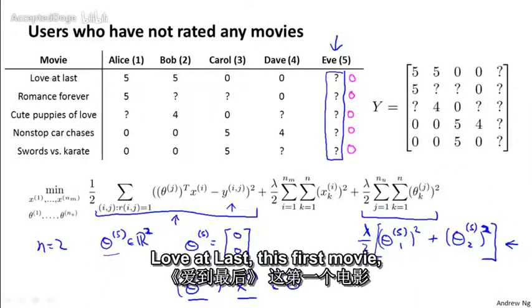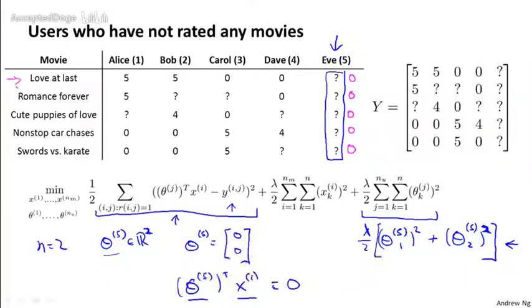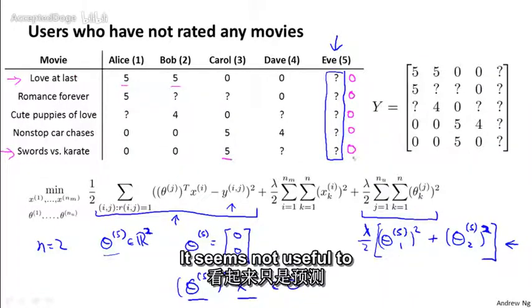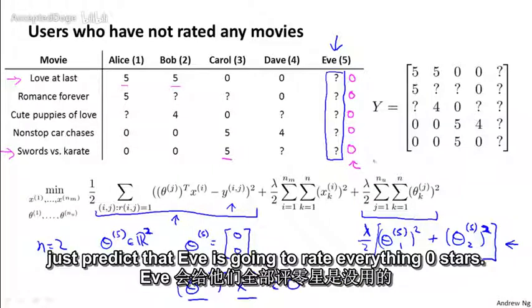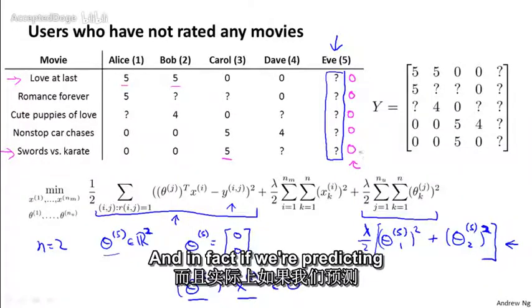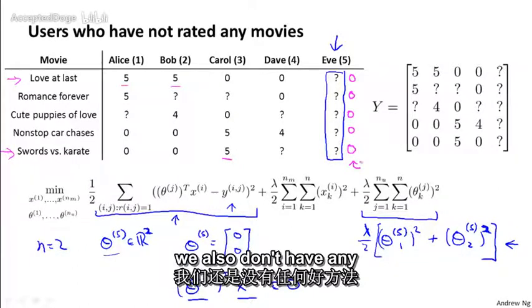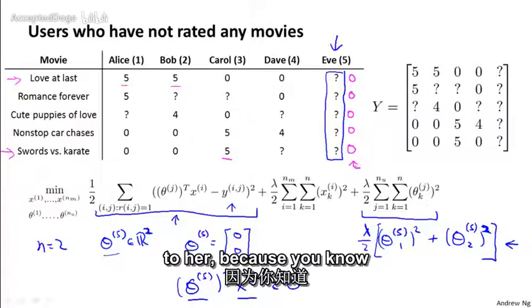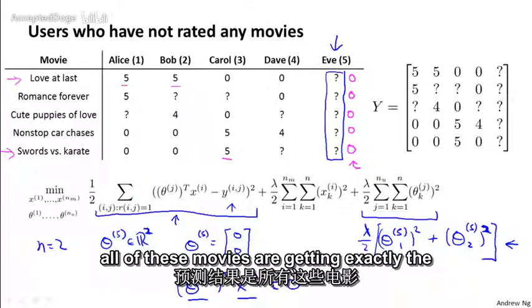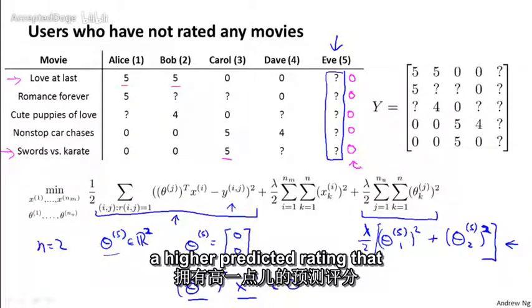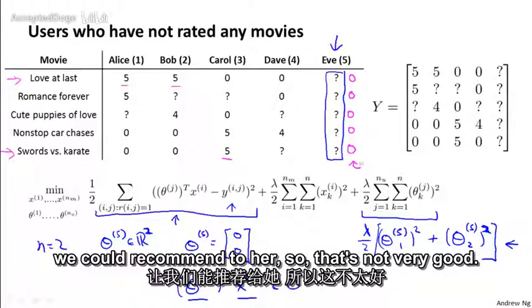I mean, if you look at the different movies, Love at Last, this first movie, a couple people rated it 5 stars. And for Swords versus Karate, someone rated it 5 stars. So some people do like some movies, it seems kind of not useful to just predict that Eve is going to rate everything 0 stars. And in fact, if we're predicting that Eve is going to rate everything 0 stars, we also don't have any good way of recommending any movies to her, because all of these movies are getting exactly the same predicted rating for Eve.